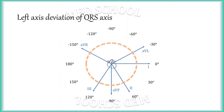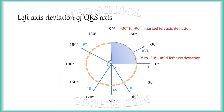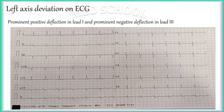There is left axis deviation of QRS frontal plane axis in left ventricular hypertrophy. QRS axis lies between 0 degrees to minus 90 degrees. Zero to minus 30 degrees is considered mild left axis deviation, whereas minus 30 to minus 90 degrees is considered marked left axis deviation. When the QRS vector is present anywhere in this quadrant, the most consistent ECG pattern will be prominent positive deflection in lead I and prominent negative deflection in lead III. Left axis deviation is characterized by QRS complexes in leads I and III appearing to be leaving each other.